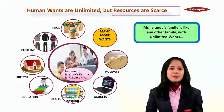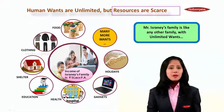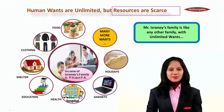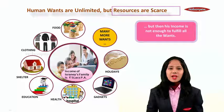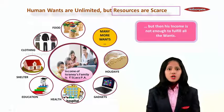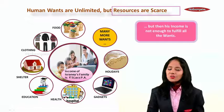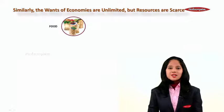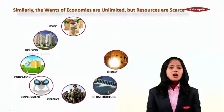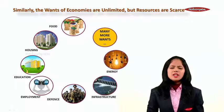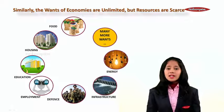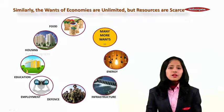Mr. Israni's family is like any other family with unlimited wants, but his income is not enough to fulfill all his wants. Similarly, at the macro level, a country too has unlimited expenses to make. The Indian government has to incur expenses to provide food to its people, build residential complexes and houses, and provide education facilities.